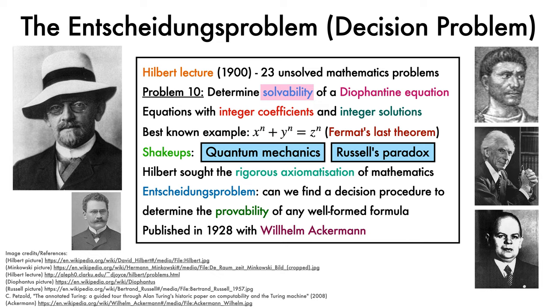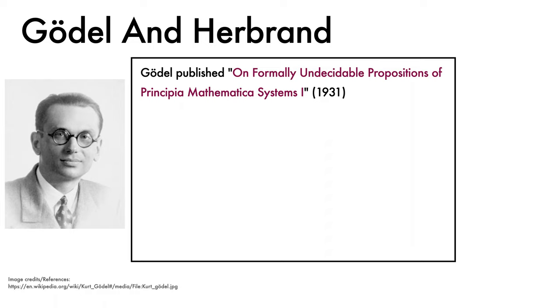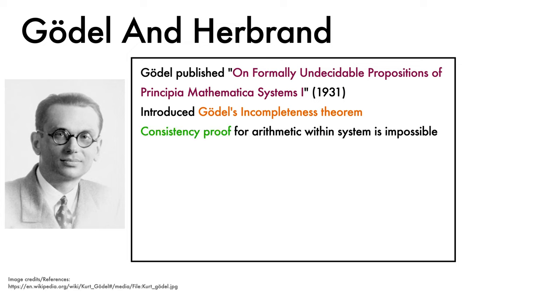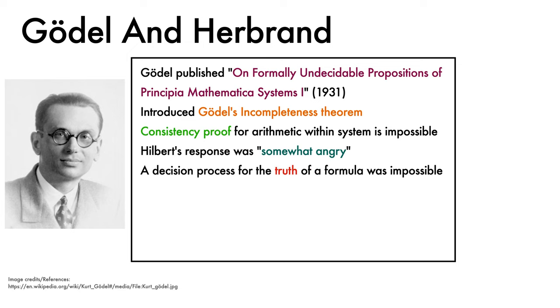Together with his assistant Wilhelm Ackermann, in 1928 Hilbert published a book that advertised the Entscheidungsproblem to the research community. In Vienna, Hilbert and Ackermann's book had found an interested reader in Kurt Gödel. In 1931, Gödel stunned the mathematical world with a paper introducing what has come to be known as Gödel's Incompleteness Theorem, with the striking implication that finding a consistency proof for arithmetic within the system itself is impossible. On learning the result, Hilbert reportedly became somewhat angry, but accepted the finding and ultimately built it into his program of work. Gödel's result meant that a general decision process for determining the truth of a well-formed formula was impossible.